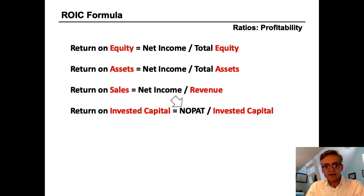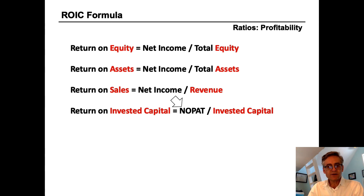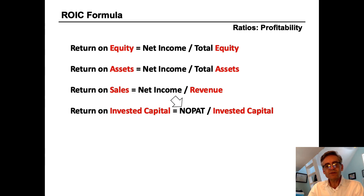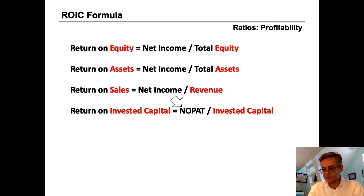Return on equity, return on assets, and return on sales were all effectively the same formula with a different denominator — all of them took net income and divided it respectively by equity, assets, or revenue. Where return on invested capital differs is that we changed the numerator also.